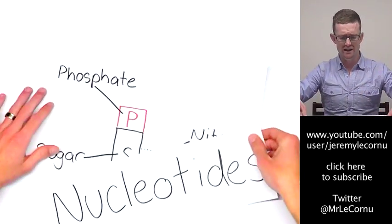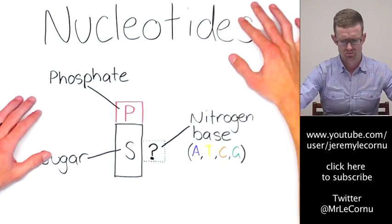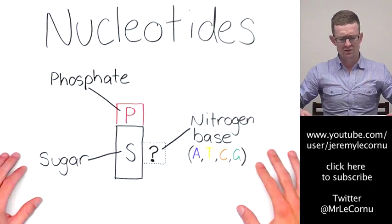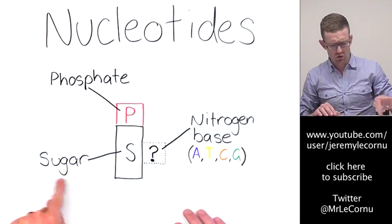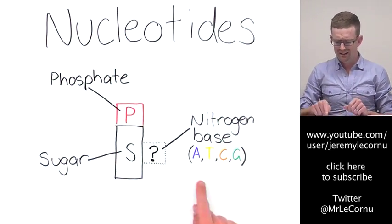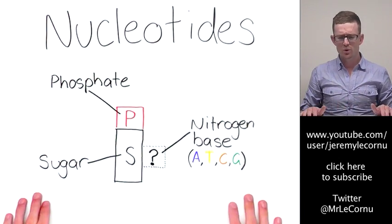Now we learnt that the subunits that make up DNA are called nucleotides. And this is what they look like. They're made up of a phosphate molecule, a sugar molecule, and a nitrogen base out of A, T, C, or G.